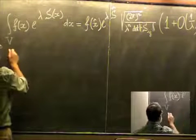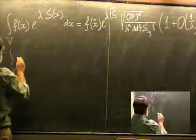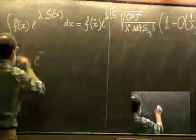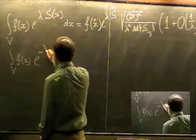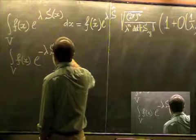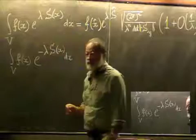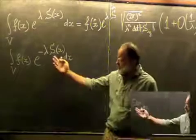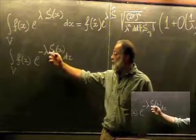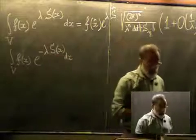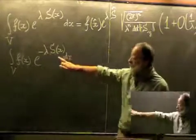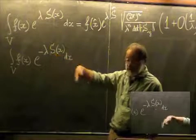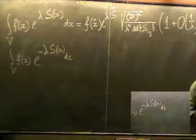Now, what happens if we have minus sign: ∫ f(x) exp(−λ S(x)) dx? For large λ, which point produces the most contribution to the integral? Clearly it is the point of minimum of S(x), by the same reasoning.